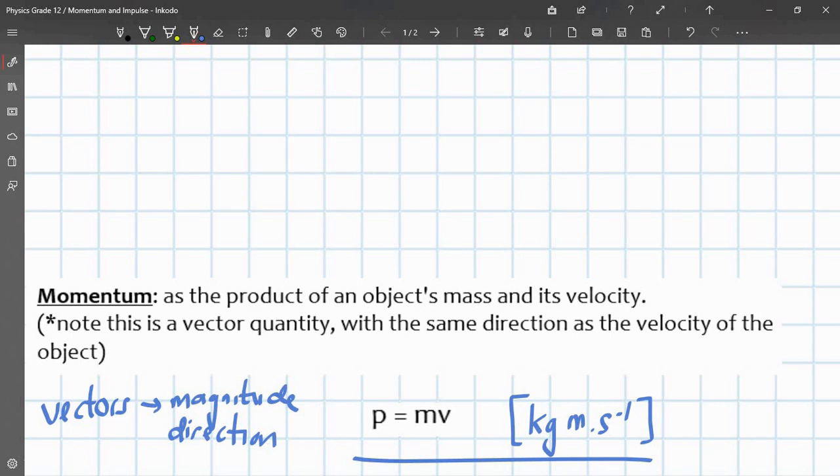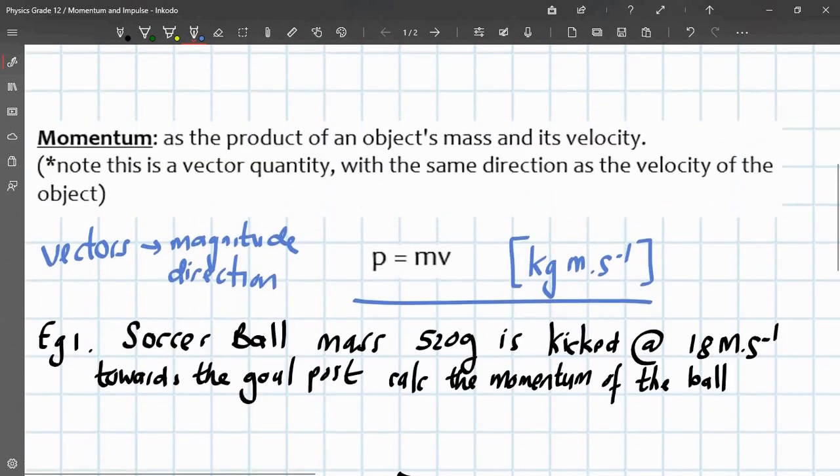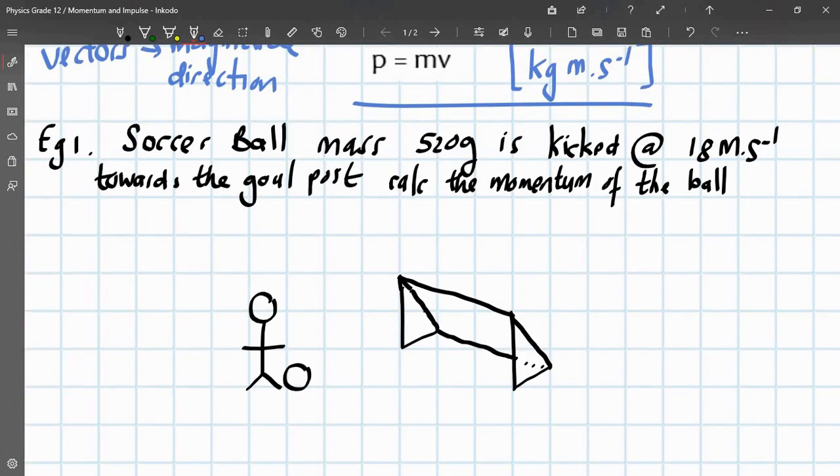We're just going to go through some examples so you can kind of get used to the mechanics of it. So, we have an example here. A soccer ball of mass 520 grams is kicked at 18 meters per second towards the goal post. Calculate the momentum of the ball.